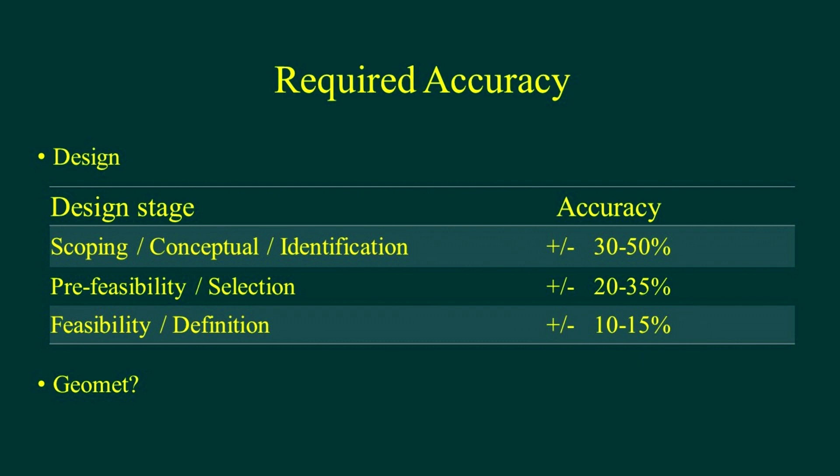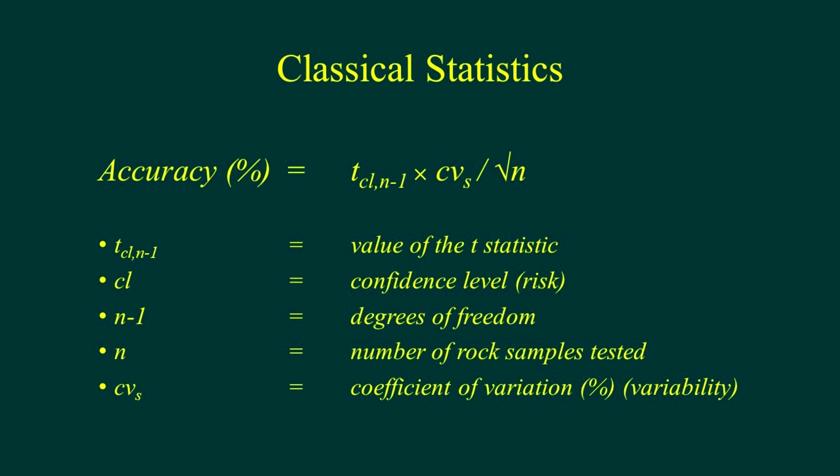So, we've done resolution. We've done accuracy. So, how does the number of tests fit into that? Well, classical statistics gives us the answer. That equation there is a classical statistical equation that relates accuracy. That's what we talked about before. Two, variability. That's the coefficient of variation, the variability of your deposit. N is the number of samples. That's what we're interested in.